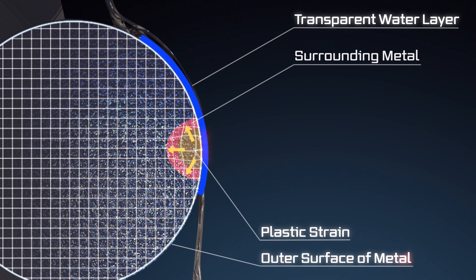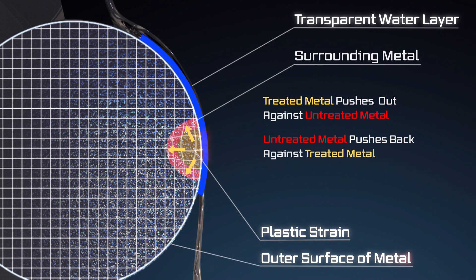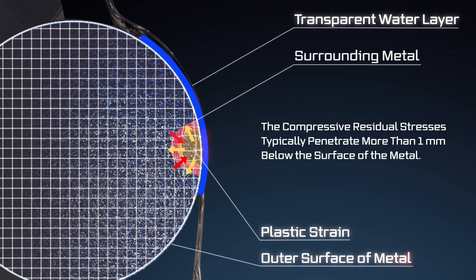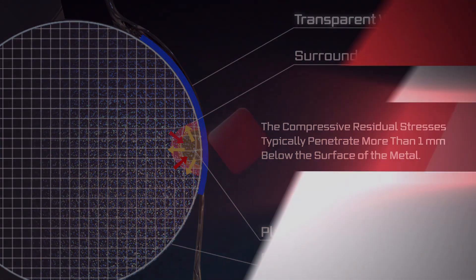The tension between these two forces creates beneficial compressive residual stresses that prevent metal fatigue. The resulting compressive residual stresses typically penetrate more than one millimeter below the surface of the metal.